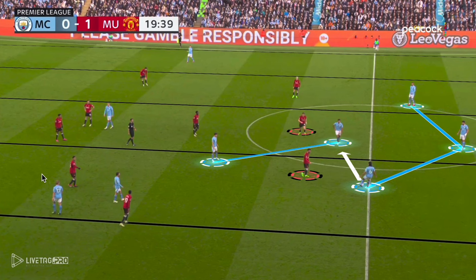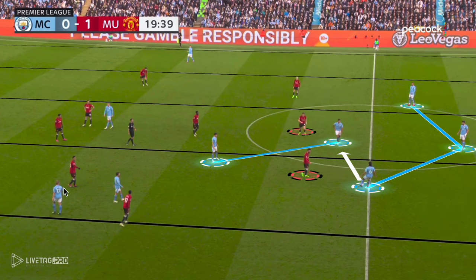We see Kevin De Bruyne floating into the left half-space, overloading it with Bernardo Silva — a frequent trend throughout the match, overloading different half-spaces at different moments. This would create an isolation on the far side, making it awkward for Manchester United defensively because of their man-orientation around their holding midfielders and their frequency of joining the last line when players were threatened, highlighting the 1v1 on the far side.